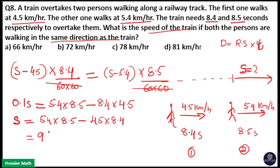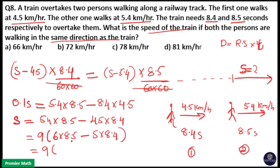Taking 9 out of both terms: 9 into 6 equals 54, and 9 into 5 equals 45. So S equals 9 times (6 into 8.5 minus 5 into 8.4). Calculating: 6 into 8.5 equals 48 plus 3 equals 51. And 5 into 8.4 equals 40 plus 2 equals 42. So S equals 9 into (51 minus 42) equals 9 into 9 equals 81. Therefore S equals 81 kilometers per hour.